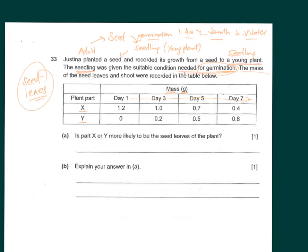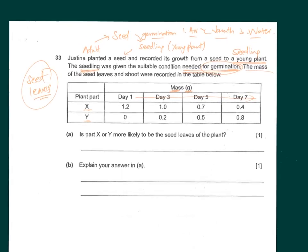Coming back to the question: part X shows a decrease in mass as the days go by, and part Y shows an increase. Question A asks which part is more likely to be the seed leaf. As explained, the seed leaf has its mass decrease because food is being drawn from it, so part X is most likely the seed leaf.